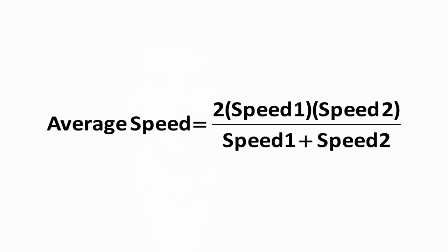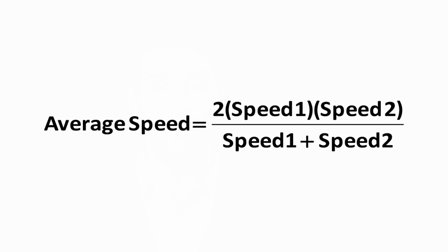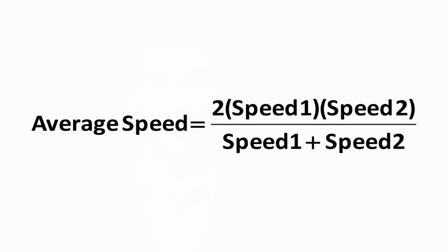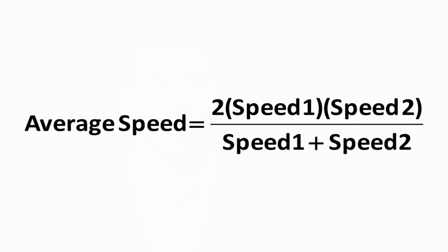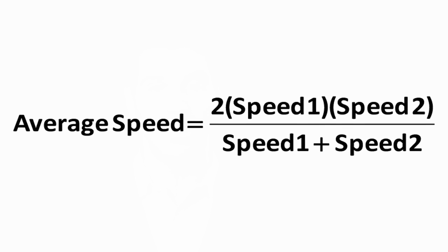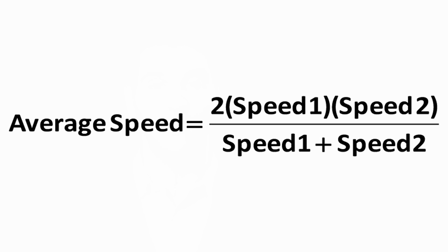Average speed equals 2 times speed 1 times speed 2 over speed 1 plus speed 2. This is known as the harmonic mean formula and it can be used to find the average speed when two individual speeds for the same distance are known. See the first bonus strategy at the end of my book for more information. Applying this formula will save a lot of time if you get this type of question on your SAT.